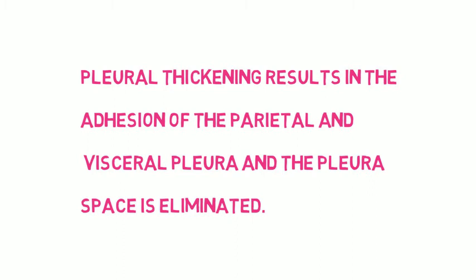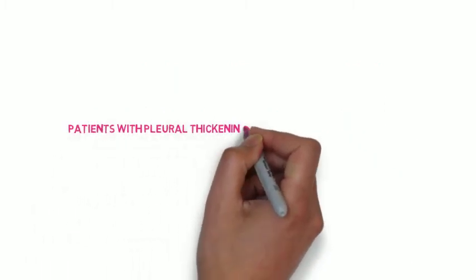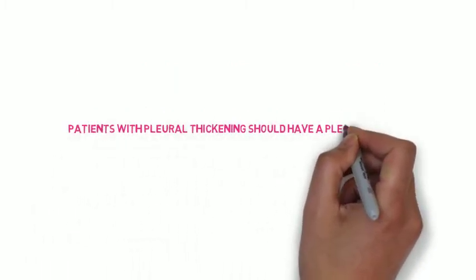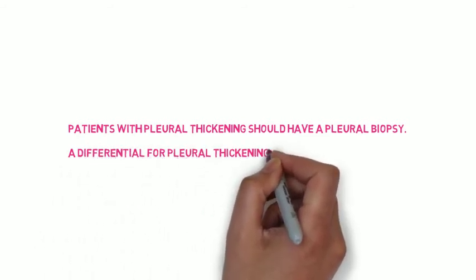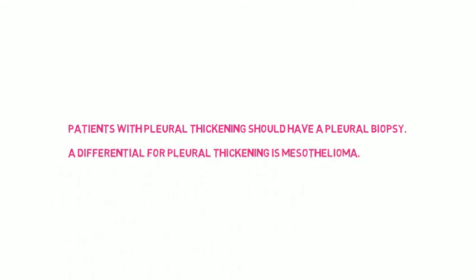The second ramification of asbestos is pleural thickening. This can result in the adhesion of the parietal and visceral pleura, and the pleural space is eliminated. Patients with pleural thickening should have a pleural biopsy, as pleural thickening can also occur in mesothelioma, so you want to rule out the cancer.